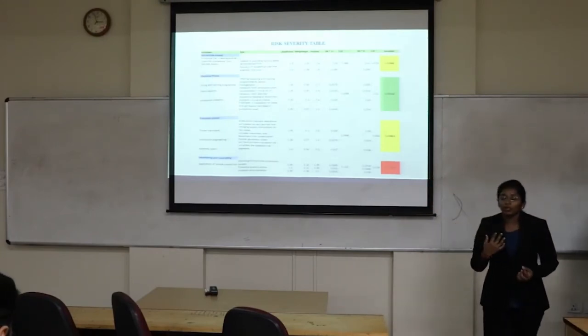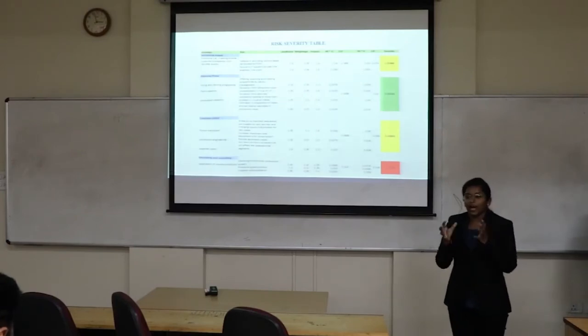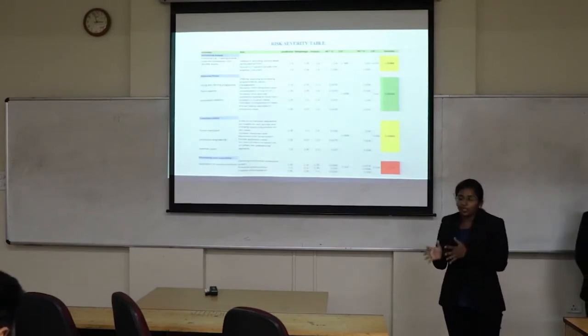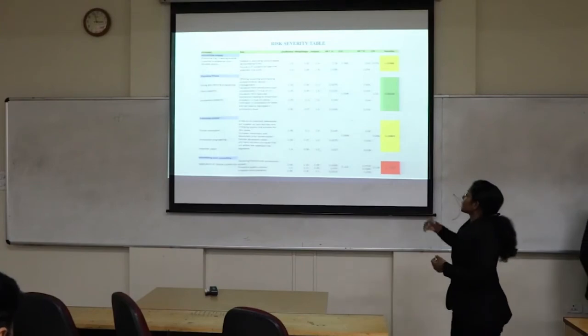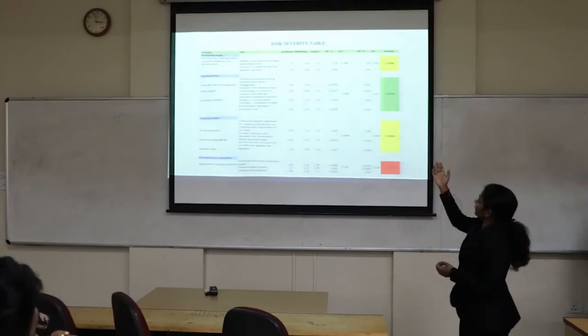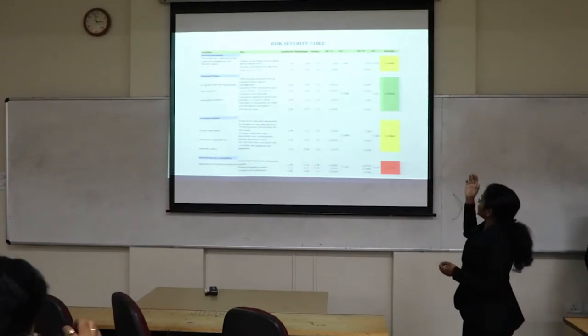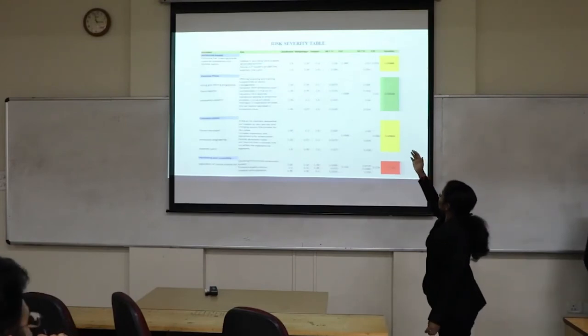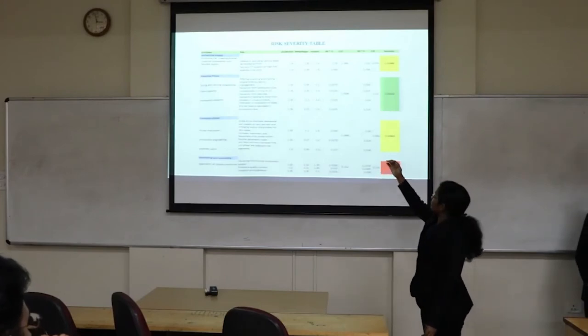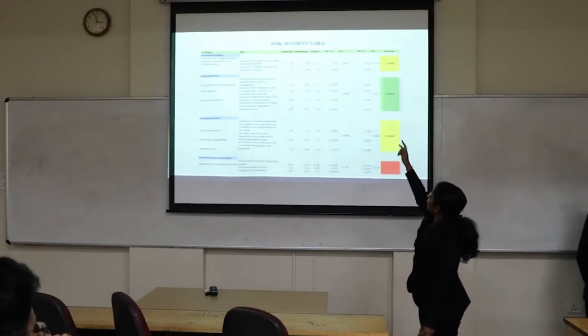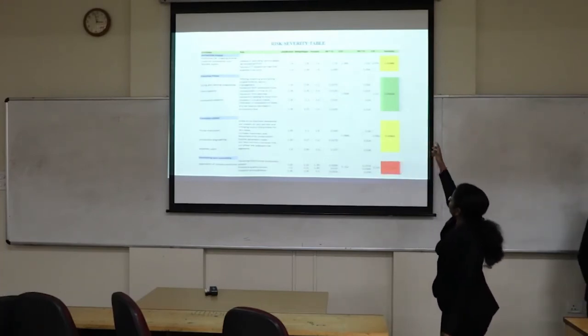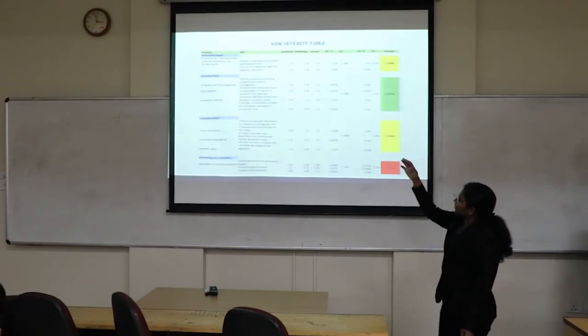It means how severe it will be if the risk for an activity occurs. For calculating CLF I have multiplied weightage into likelihood and for calculating CIF I have multiplied impact into weightage. We will be getting the values. I have added values according to the phase. In the initiation phase there are two risks. I have added that and found out the severity and in the same way I have calculated for each phase.